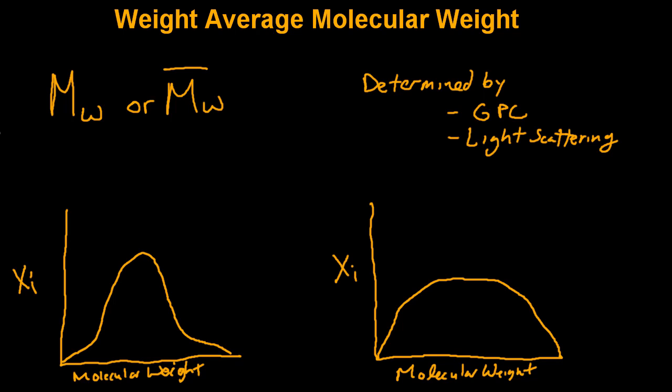The weight average molecular weight is another means of characterizing the molecular weight of a polymer sample. It's denoted by an uppercase M with a subscript W, and you'll sometimes see it with or without an overbar.